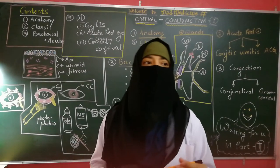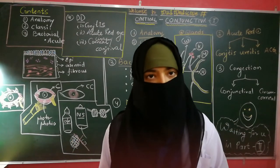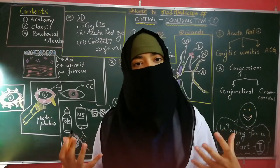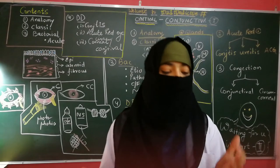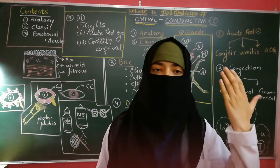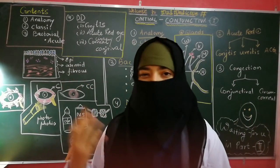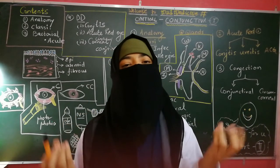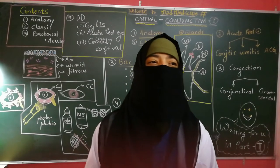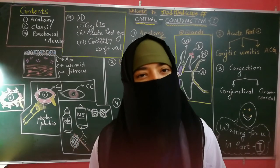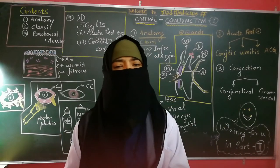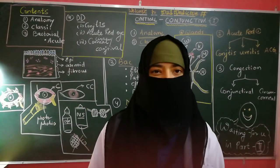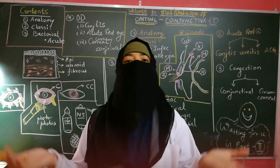Regarding symptoms of bacterial conjunctivitis: the patient will report redness of the eye, slight blurring of vision, discomfort described as grittiness or foreign body sensation, photophobia, and some discharge. These are generally mild, non-specific symptoms.